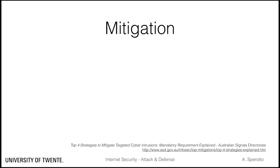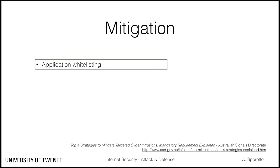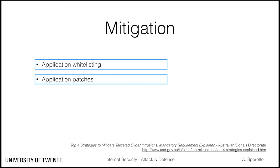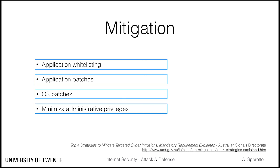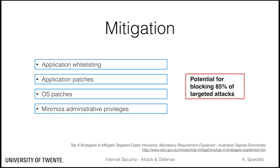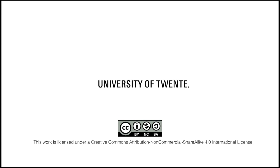The top four mitigation strategies are the following. First, application whitelisting: creating a whitelist of allowed applications helps identify and stop unknown executables. Second, patch applications: applications need to be up-to-date to reduce the likelihood that they might be exploited. Third, patch the operating system: the OS software could also be compromised if it is not updated regularly. Fourth, minimize administrative privileges: accounts with administrative privileges are very valuable for attackers, so keeping them to a minimum limits risk. The same directorate indicates that implementing this small set of mitigation strategies could already potentially block 85% of targeted attacks in their experience. Thank you.